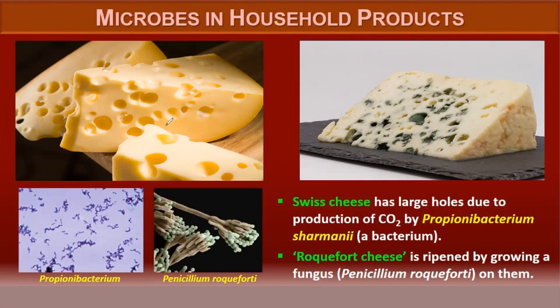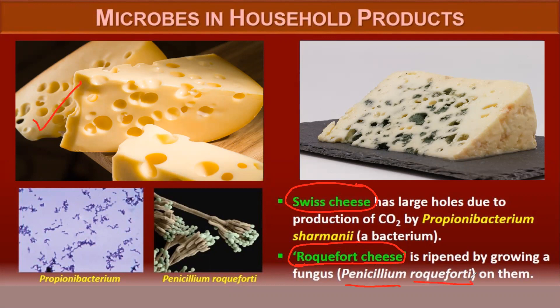There are different types of cheese. One is Swiss cheese, produced by the activity of bacteria — Propionibacterium shermani. Another is Roquefort cheese, produced by fermentation using the fungus Penicillium roqueforti.